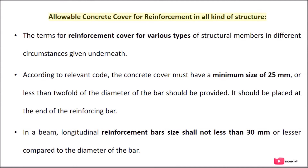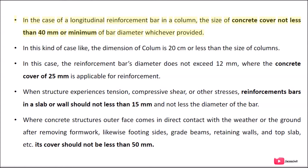Allowable concrete cover for reinforcement in all kinds of structures: According to the relevant code, the concrete cover must have a minimum size of 25 mm, or less than two-fold the diameter of the bar. It should be placed at the end of the reinforcing bar. In a beam, longitudinal reinforcement bar size shall not be less than 30 mm or less than the diameter of the bar. In the case of a longitudinal reinforcement bar in a column, the size of concrete cover shall not be less than 40 mm or the minimum bar diameter, whichever is greater.